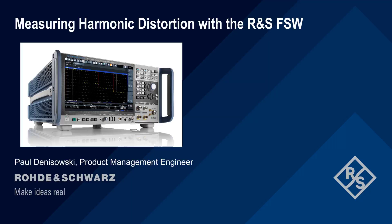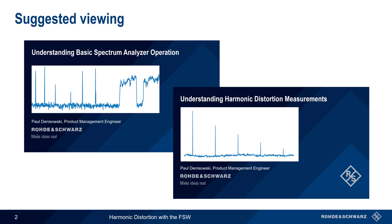Hello, and welcome to this presentation: Measuring Harmonic Distortion with Rohde & Schwarz FSW. In this presentation, we'll show you how to measure harmonic distortion using a Rohde & Schwarz FSW series spectrum analyzer. This presentation assumes a basic understanding of spectrum analyzer operation and harmonic distortion measurements. If you're unfamiliar with these topics or would like a brief review, you might want to watch the prerequisite presentations before beginning.